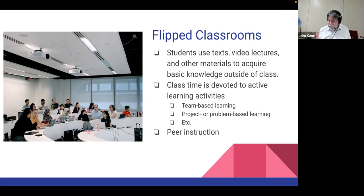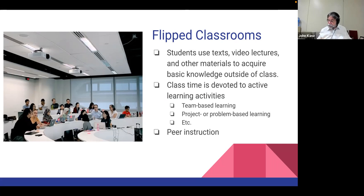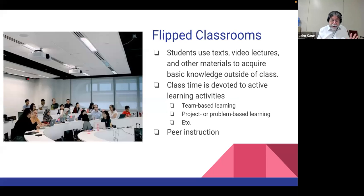An example I've mentioned many times: Eric Mazur was using clickers and kept trying to explain a concept. Students kept getting it wrong no matter how he explained it. Then he said, why don't you try explaining it to each other? They did, and all of a sudden the scores went way up — peer instruction was much more effective than his own instruction, despite all of his teaching awards and years of experience.